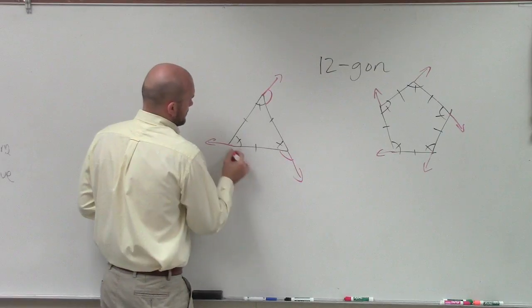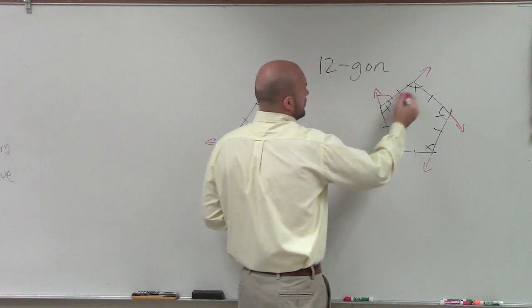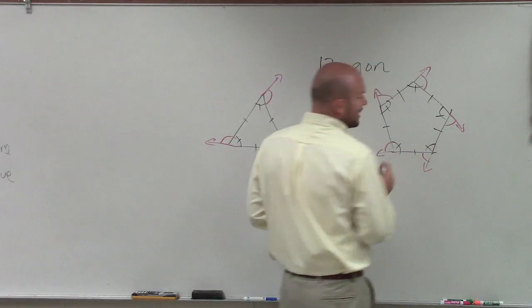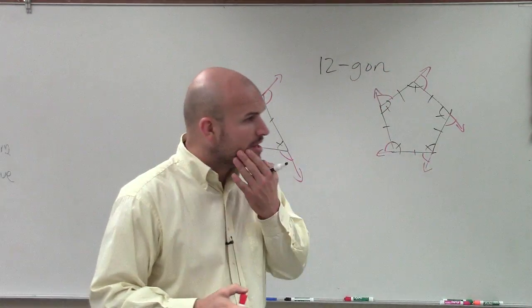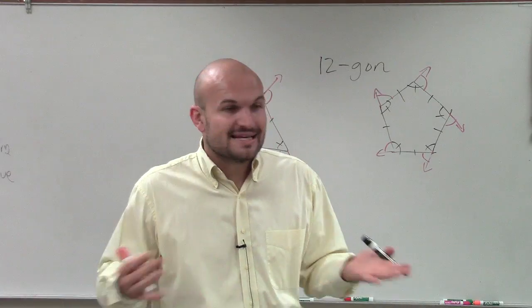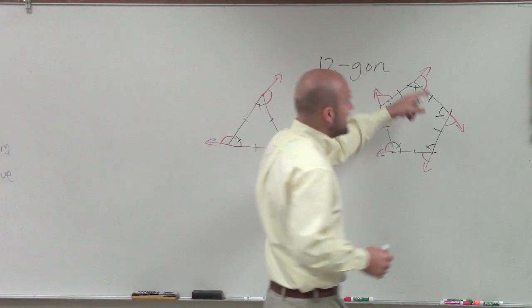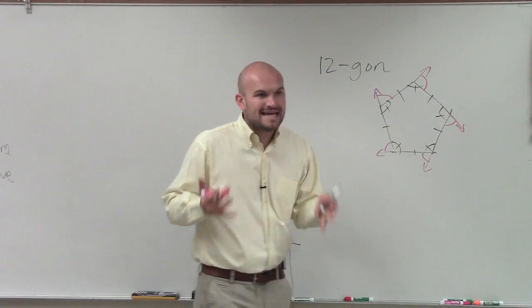What did we figure out about the measure of all of our exterior angles? What did they add up to? Shane, do you remember? 360. 360. It didn't matter how many sides I had of a polygon. The measure of all of my exterior angles always added up to 360.